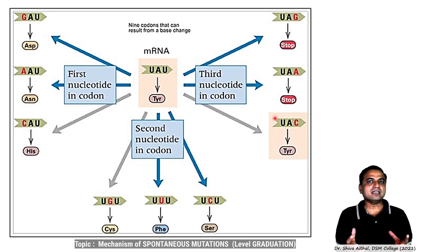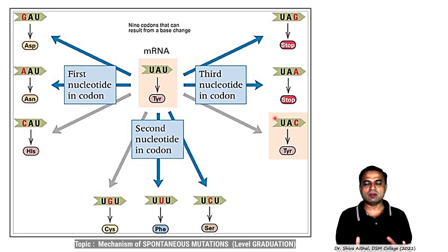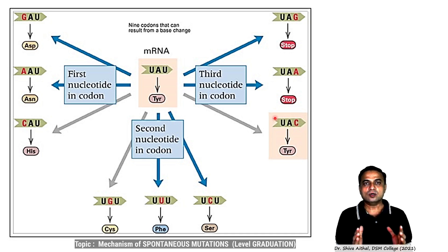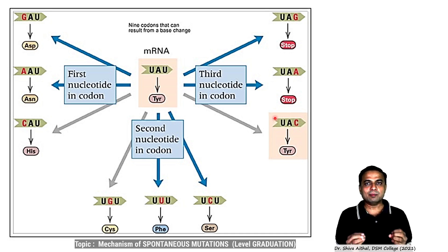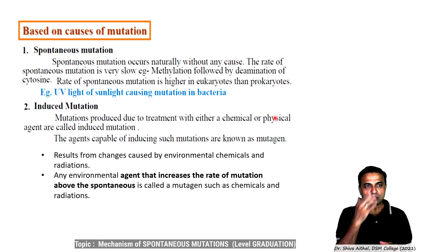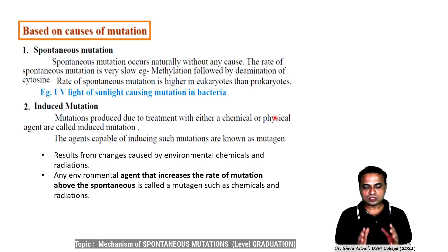When I say a base mutates spontaneously, in the coming slides you will see that without any reason in nature, the rate is 10 to the minus 6 to 10 to the minus 12 — meaning one cell in that many cells undergoes a sudden permanent change. We will try to explore how sudden this really is. Things are uncontrolled in the metabolic system of the cell. If it is controlled or induced, then that is an induced mutation. Based on causes, there are two types: spontaneous mutation and induced mutation.